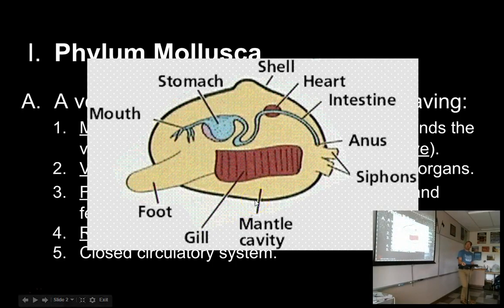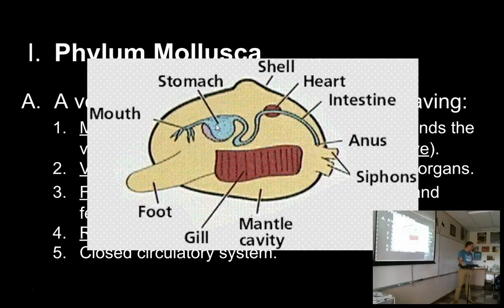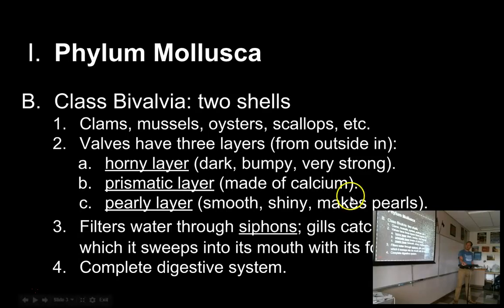Here's a clam serving as a good example of a basic mollusk. There's a mantle — this outer sheath layer of tissue that surrounds the whole thing. There's a cavity inside the mantle in which the gut is just kind of thrown in there. They will have a mouth, stomach, intestine, and anus — a one-directional digestive tract. They've got a heart and circulatory system, gills, and a muscular foot.